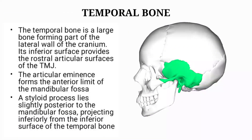The proximal articulating bone is the temporal bone, which is a large bone forming part of the lateral wall of the cranium. Its inferior surface provides the articular surfaces of the TMJ. The articular eminence forms the anterior limit of the mandibular fossa. A styloid process lies slightly posterior to the mandibular fossa, projecting inferiorly from the inferior surface of the temporal bone.